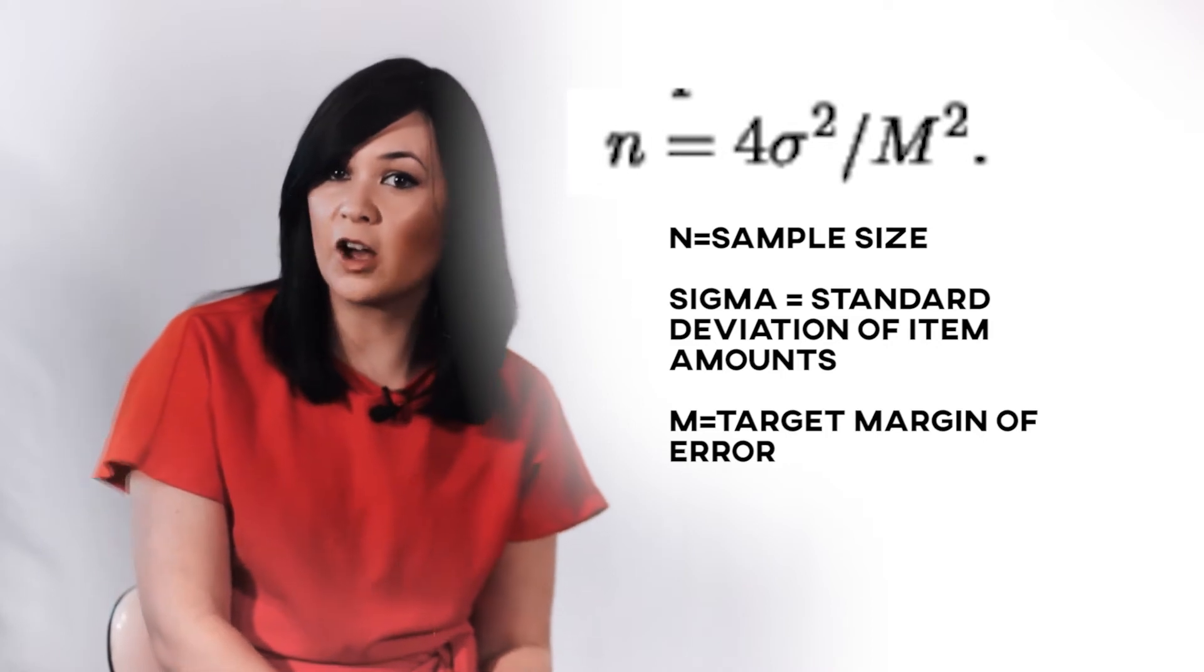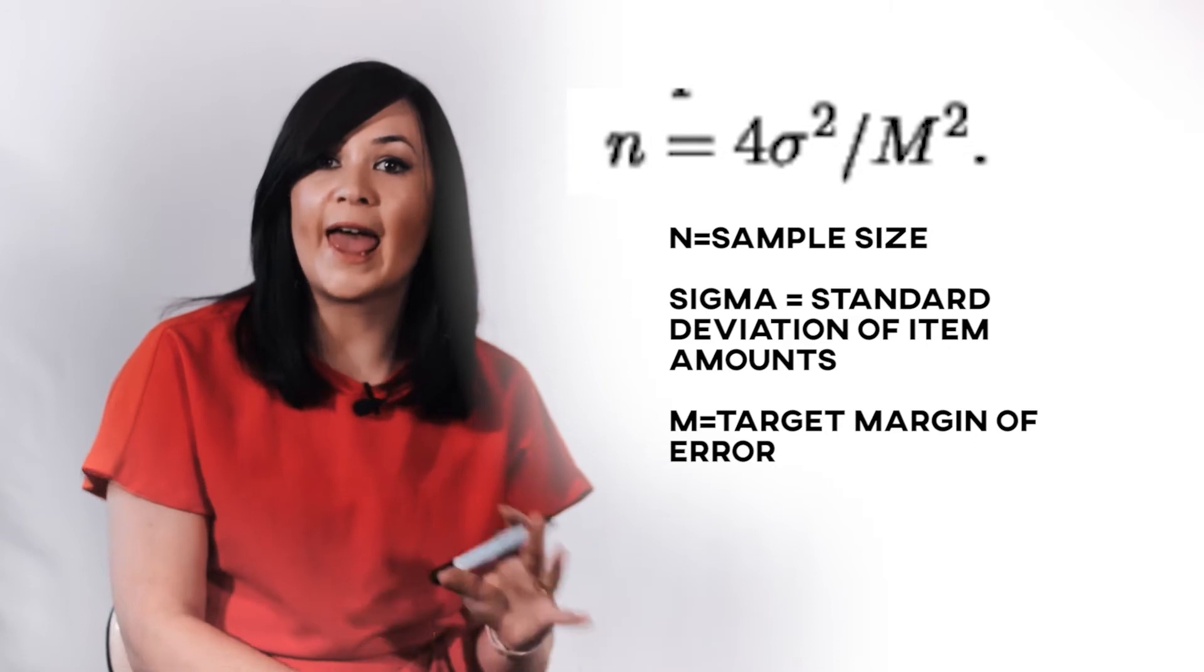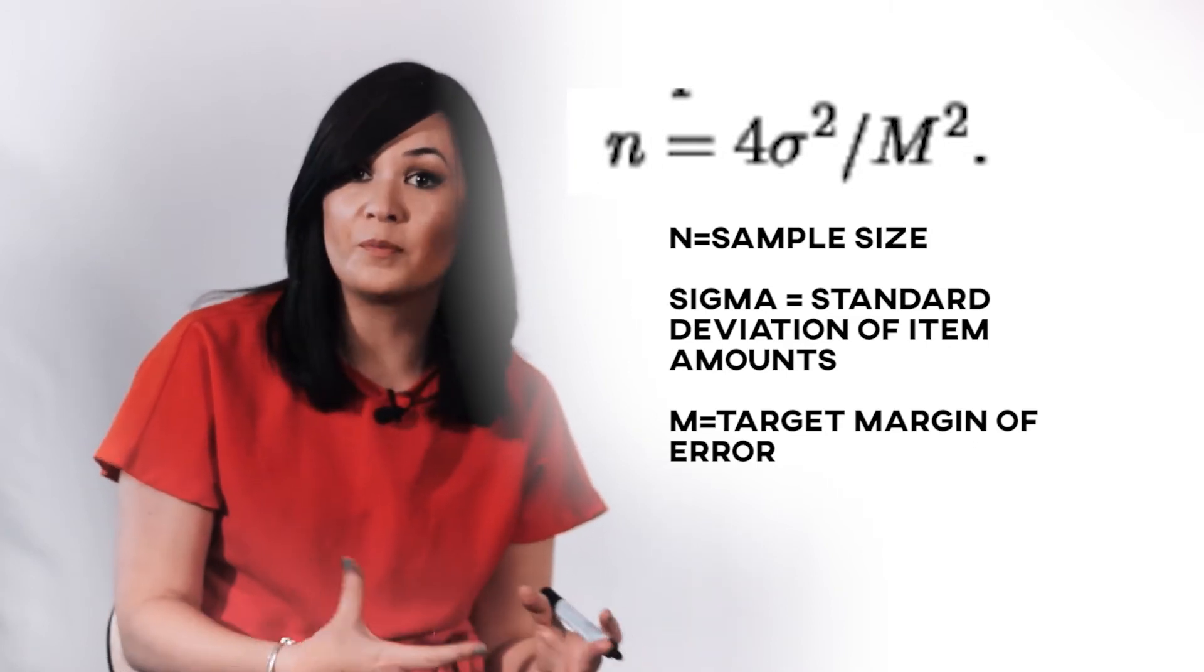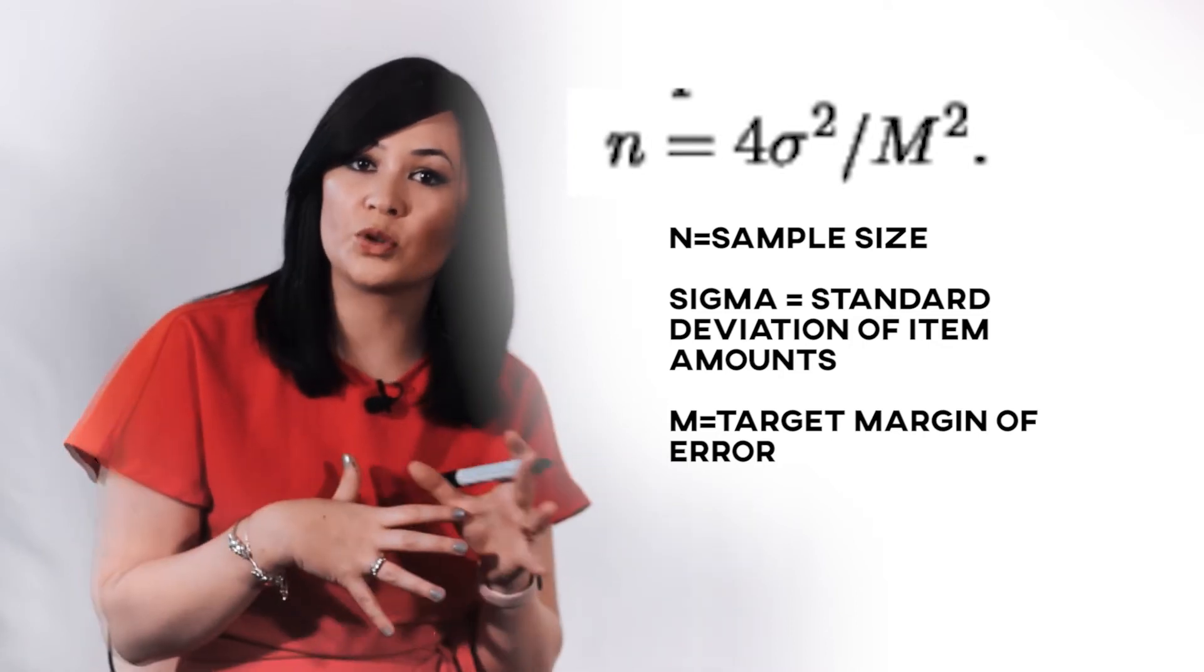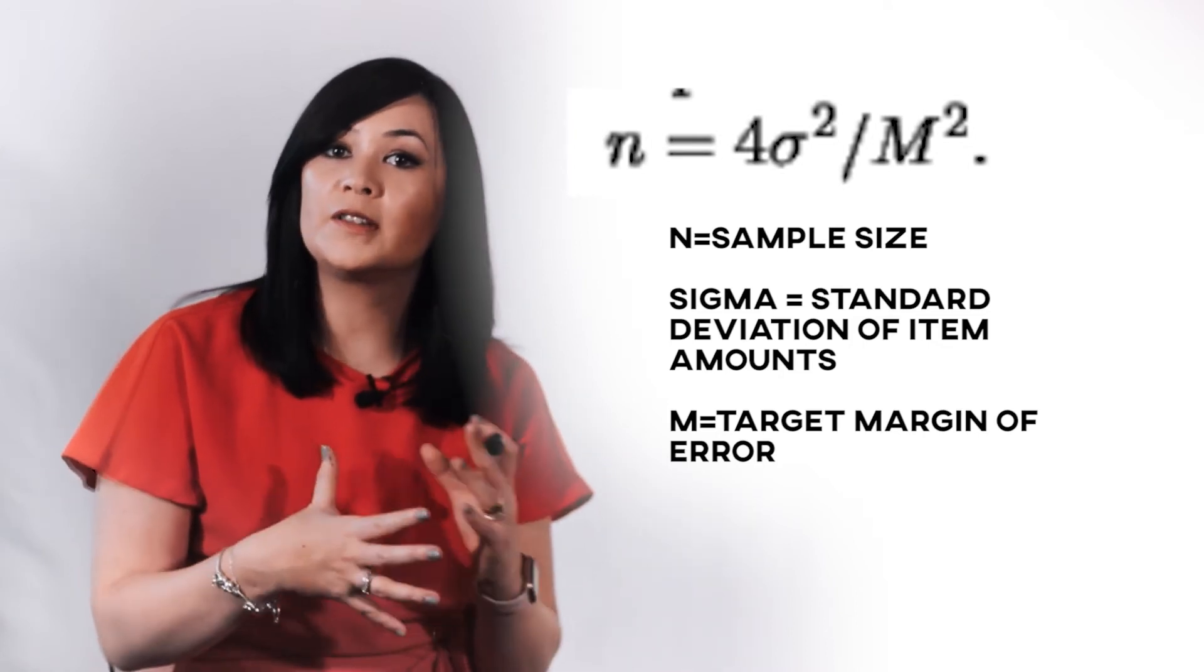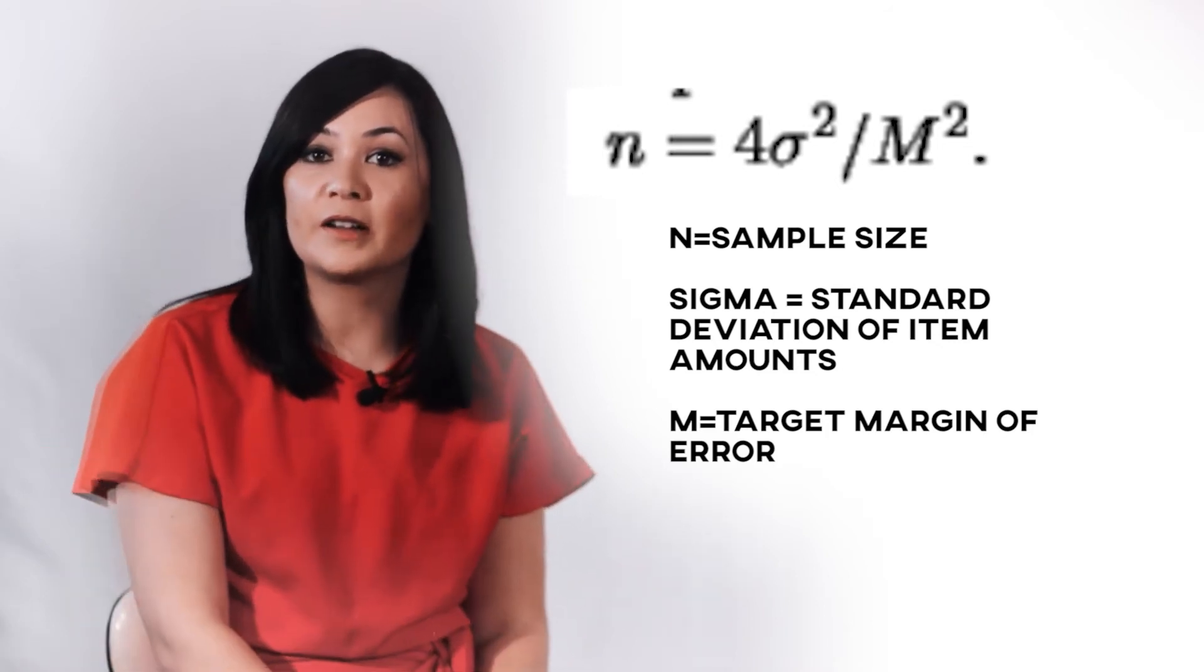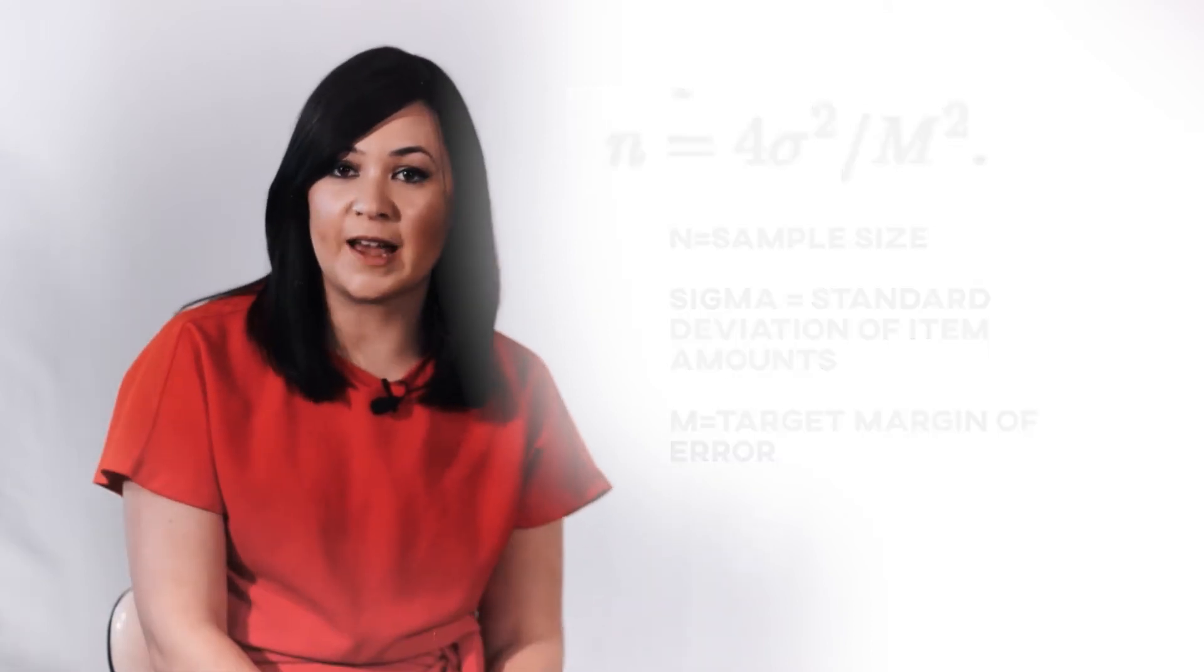We have now seen how to define the sampling procedure and how to choose the sample size. Once the sampling type and size has been decided, we can create a random sample through analysis using any suitable statistics software such as SPSS or R. Next, we would take those sample claims and have the auditor review them one by one to determine the overpayment in each. Finally, once the audits have been conducted on those sample claims, it's time to conduct the extrapolation itself.